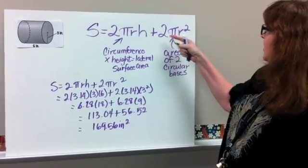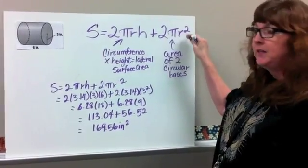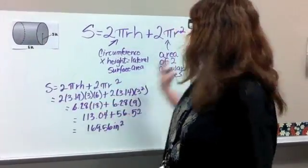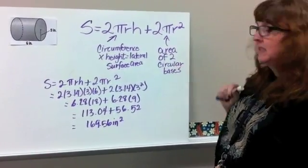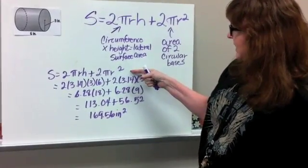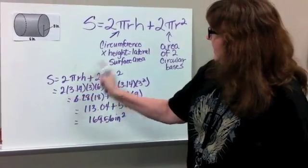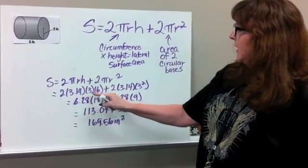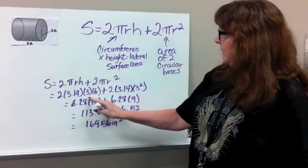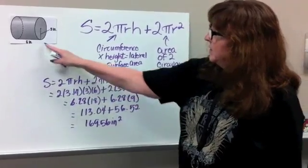plus the 2πr². If that sounds familiar, that's your two circles. You've got your πr², but you've got the two circles for your bases. So you can write your formula down and plug it in and say 2 times our pi, which is 3.14, times our radius, which is 3, times our height, which is 6,